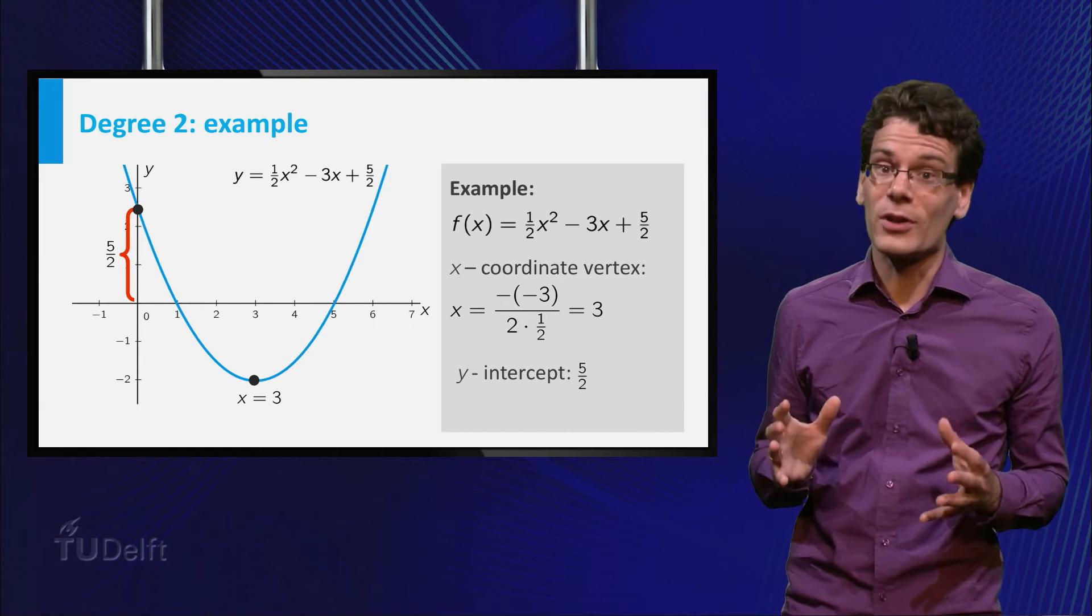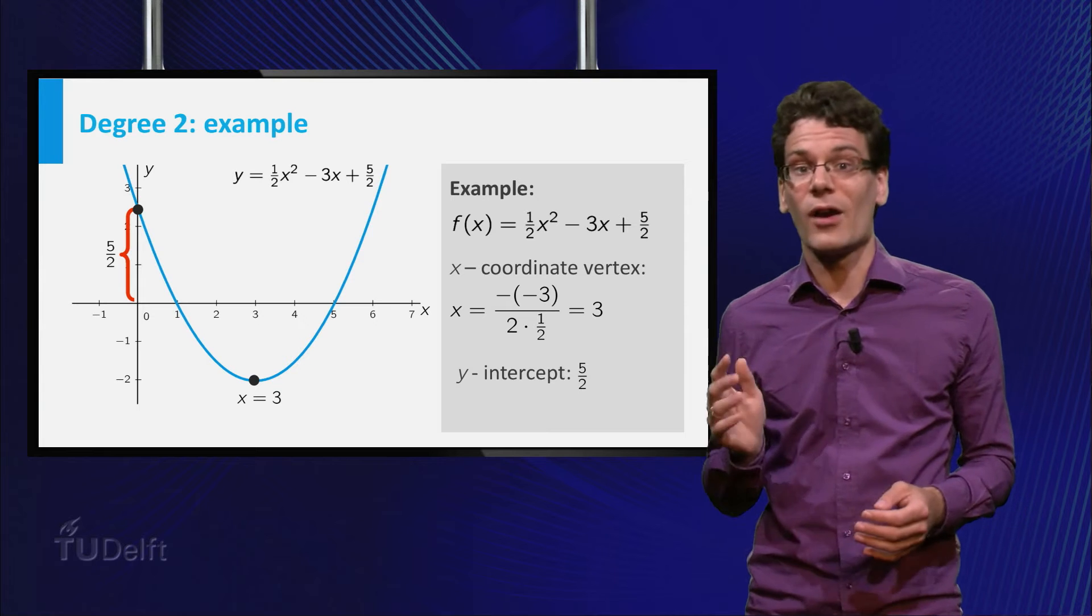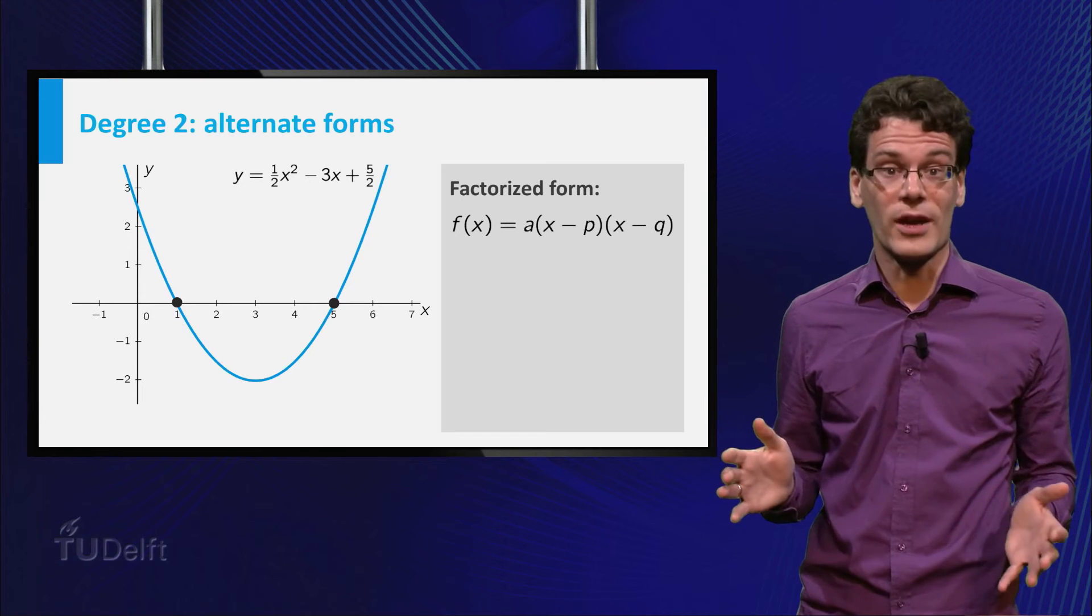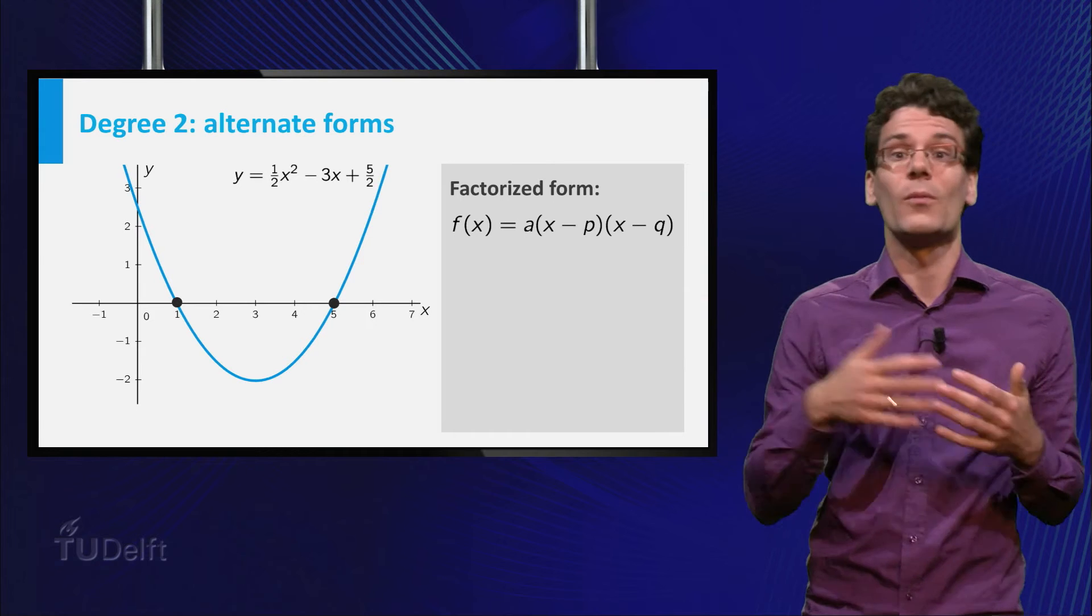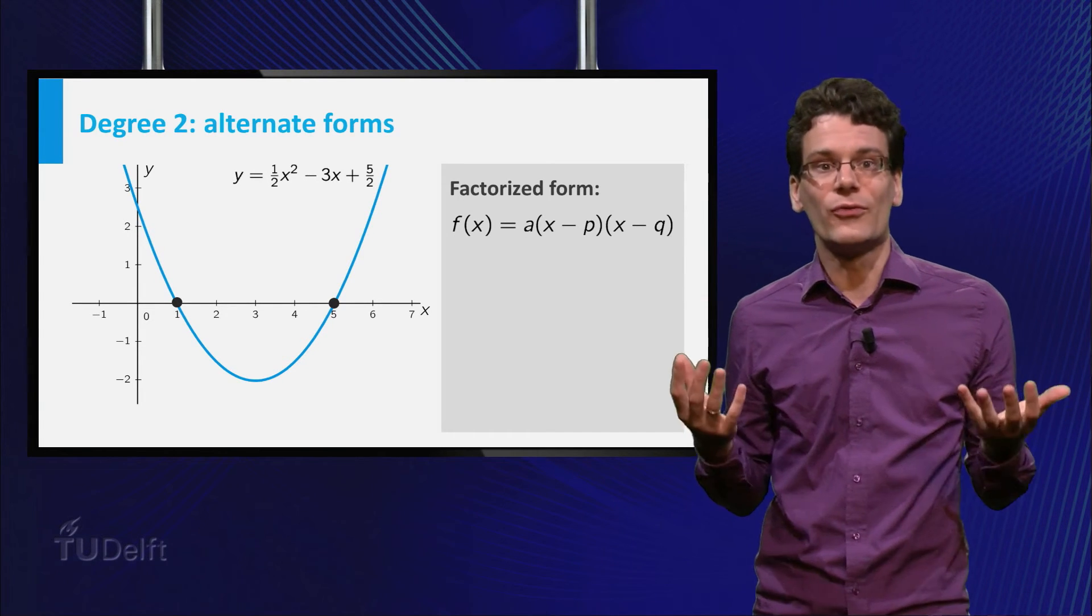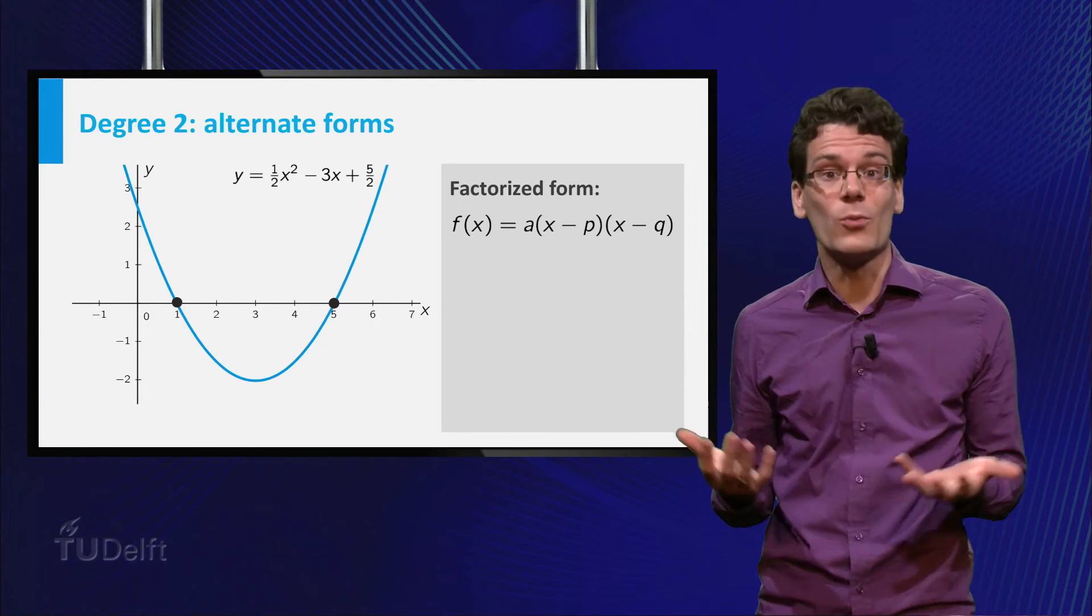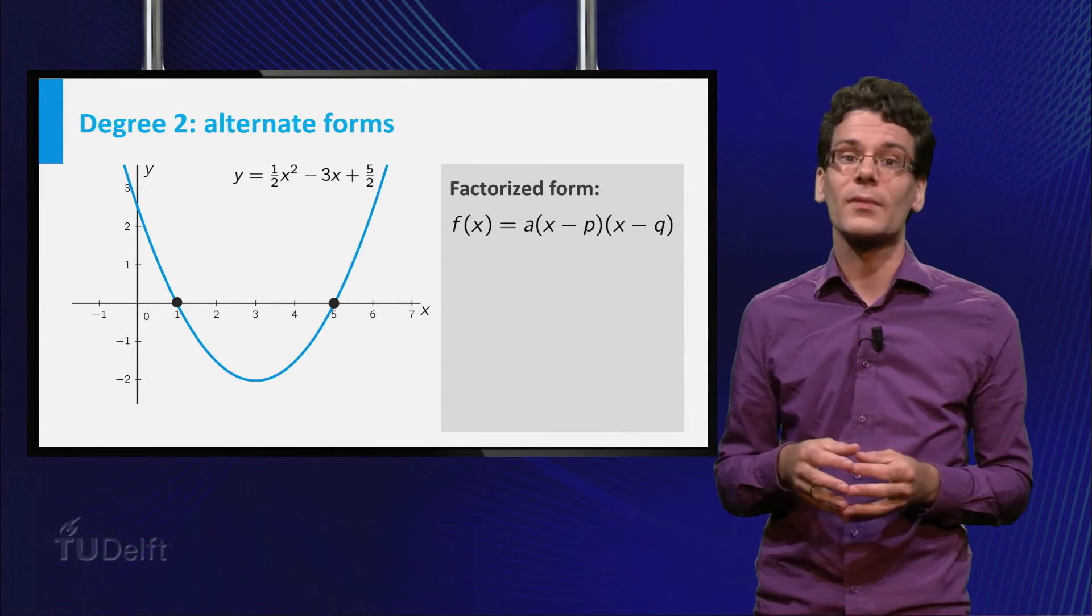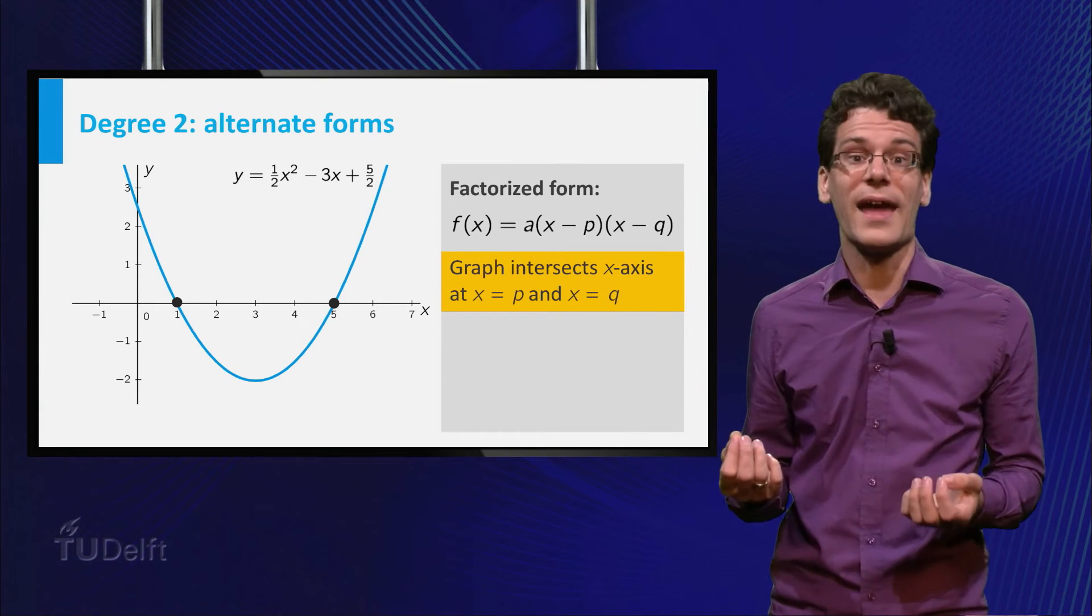As we mentioned, you can write any polynomial in standard form. But when it comes to quadratic polynomials, there are at least two other forms that are also very useful. The first is the factorized form, a times x minus p times x minus q, where a, p and q are numbers. The advantage of this form is that it tells you a lot about the shape of the graph. a gives information about the wideness of the parabola, and whether it opens upward or downward, just as before. p and q are precisely the x-coordinates of intersection points with the horizontal axis.